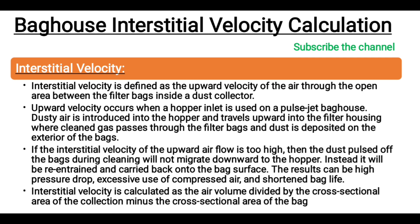What will happen if interstitial velocity is too high? If the interstitial velocity of the upward airflow is too high, then the dust pulsed off the bags during cleaning will not migrate downward to the hopper. Instead, it will be re-entrained and carried back onto the bag surface. The results can be high pressure drop, excessive use of compressed air, and shortened bag life.